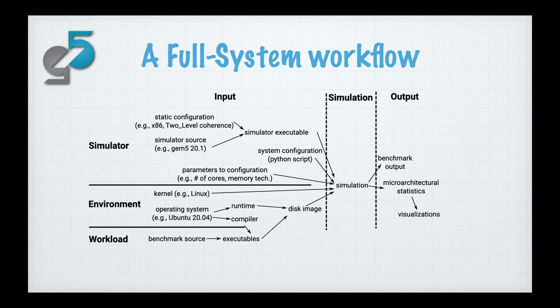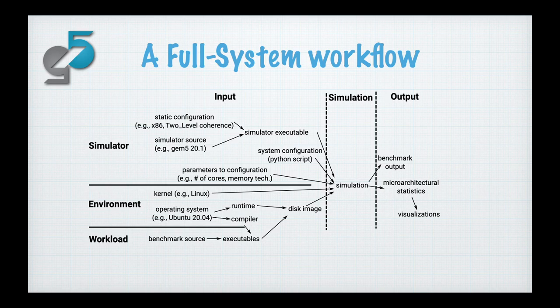Here's an example of the complexity that can be involved with running GEM5. Here's a workflow of a typical full system execution in GEM5. You require the gathering of things such as Linux kernels, which you have to then add an operating system such as Ubuntu 20.04. If you wanted to benchmark, you're going to have to get a benchmark source and compile it with a particular compiler. You need to specify your system configuration via a Python script.